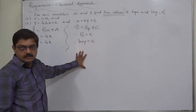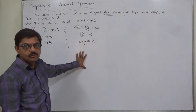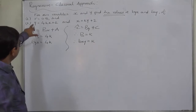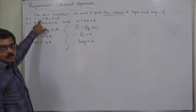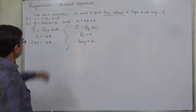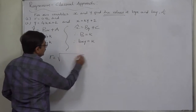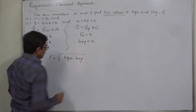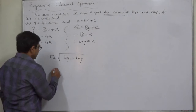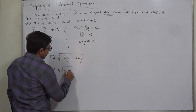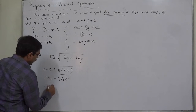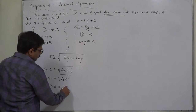We have byx and bxy expressed in terms of k, but we don't have their numerical values. For this we need additional information — the coefficient of correlation is 0.8. By an important property, the coefficient of correlation is the geometric mean of the two regression coefficients, so r = √(byx · bxy). That gives us 0.8 = √(4k · k) = √(4k²) = 2k.